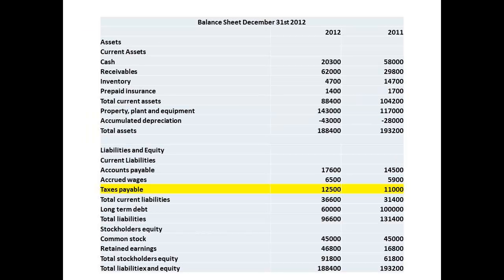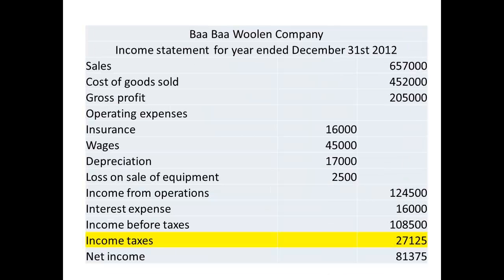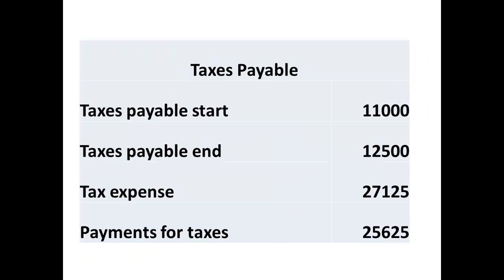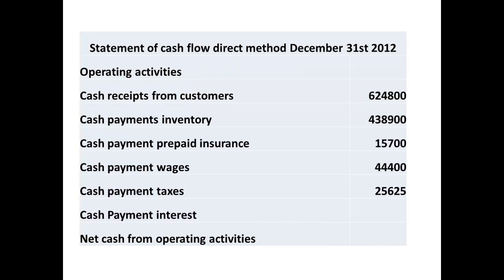To determine cash paid for taxes, we need the taxes payable figure for the start and end of the year, and the figure for taxes from the income statement. We take taxes payable at the start, add the tax expense, then subtract taxes payable at the end of the year. This gives us a figure of $25,625 for the cash payment for taxes.